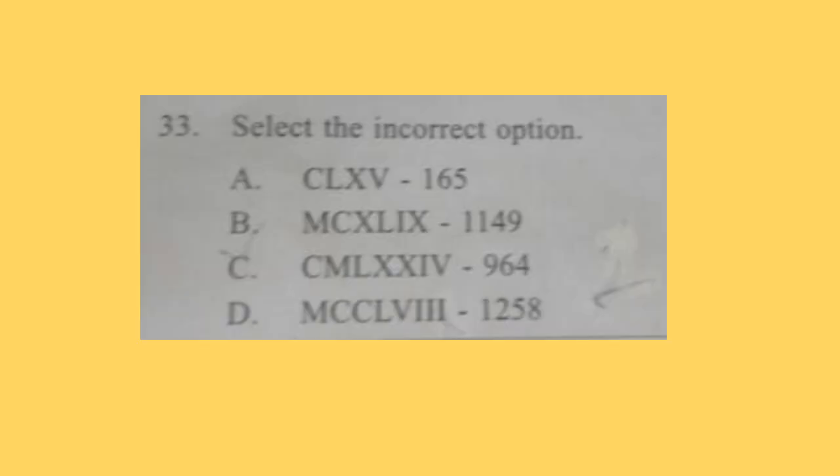Question 33: Select the incorrect option. Three options are correct and only one is incorrect, and that is your answer. Correct answer is option C. CMLXXIV will not be 964 but it will be 974. So this is incorrect. Option C is the answer.